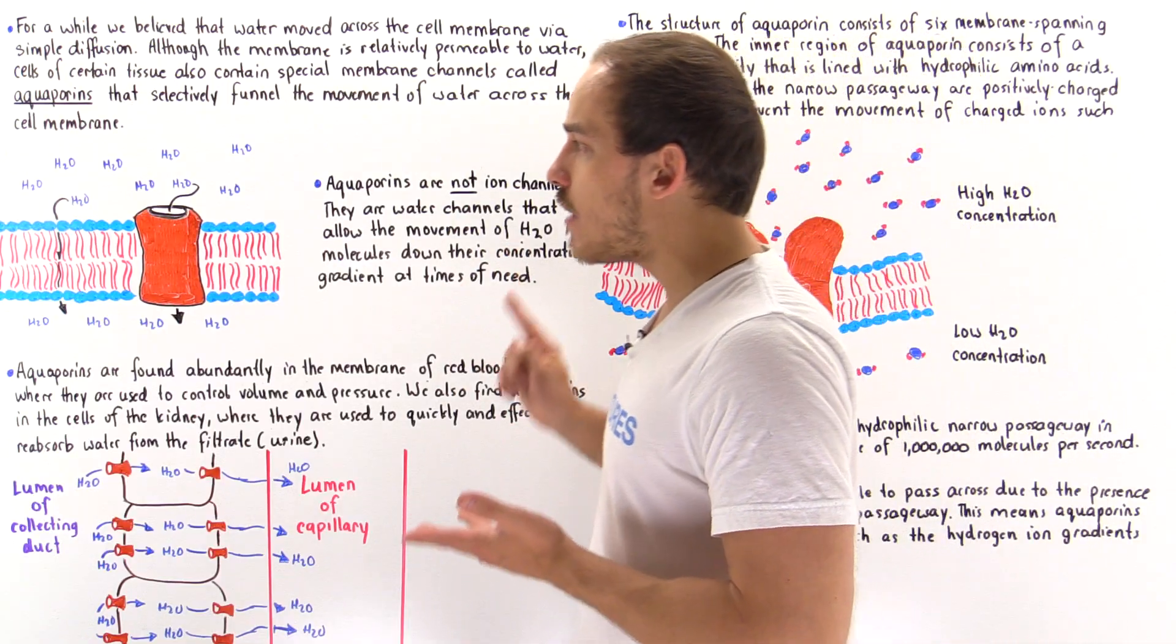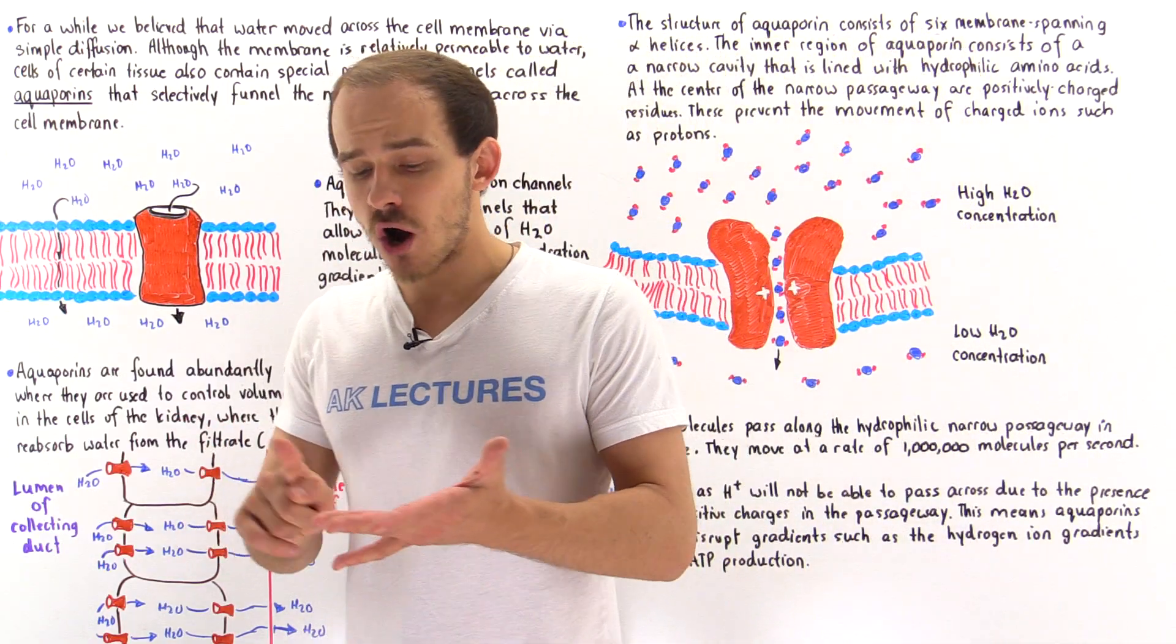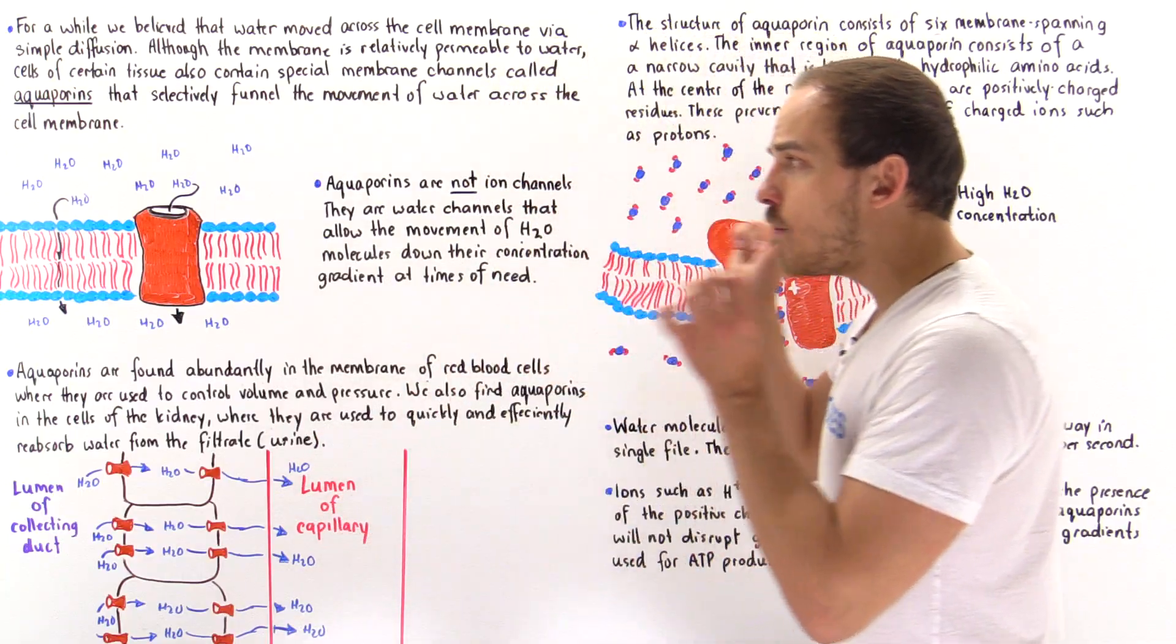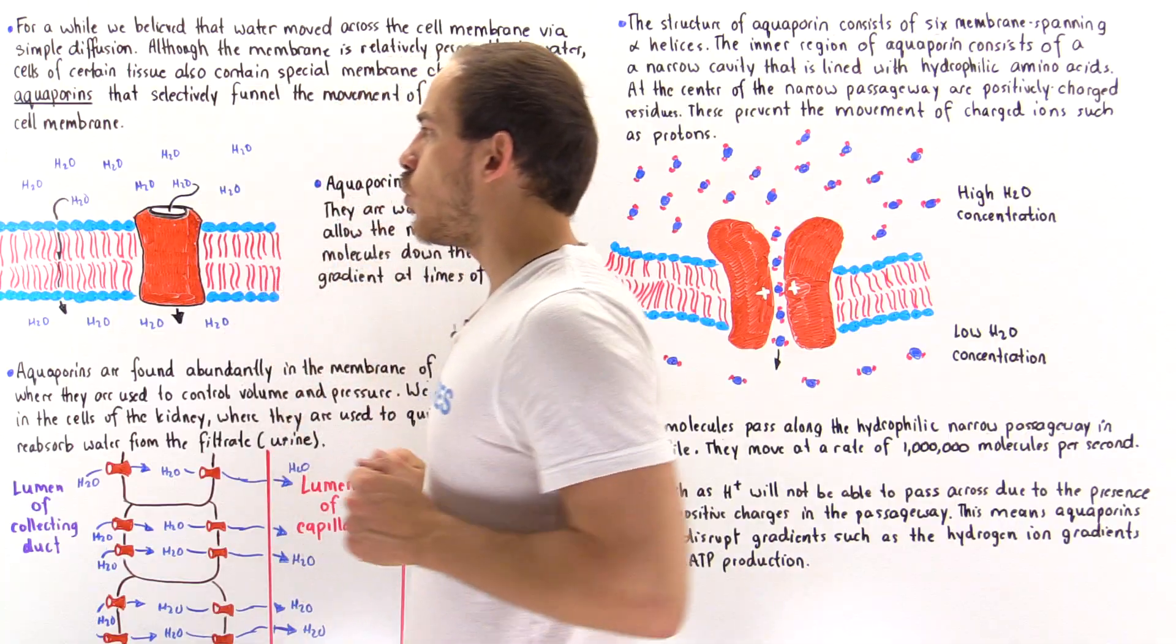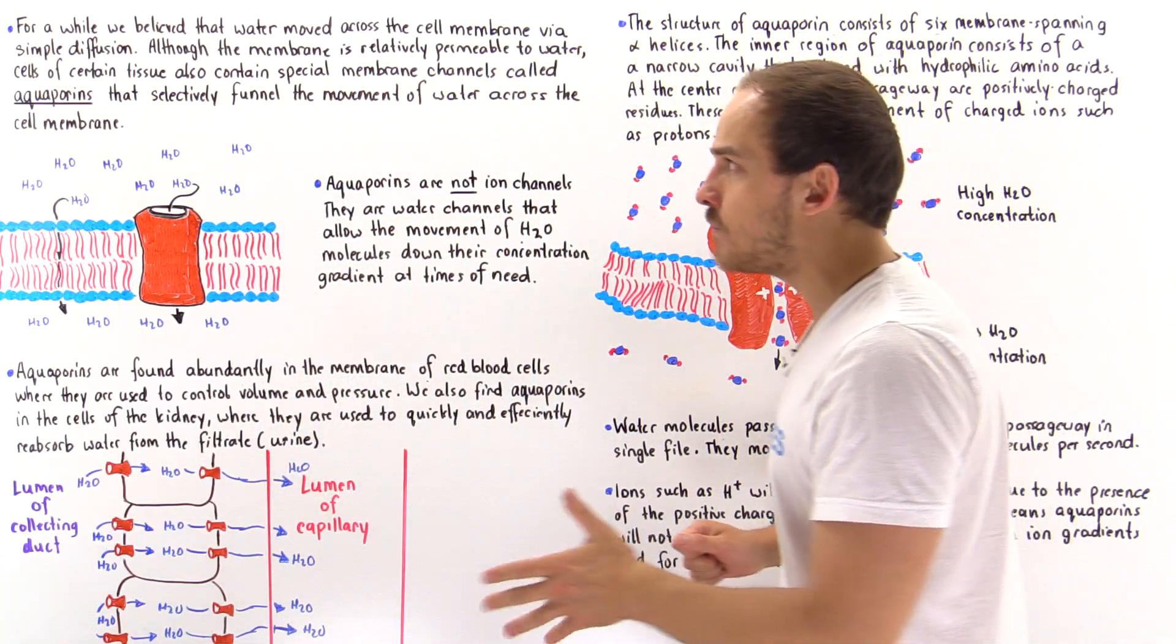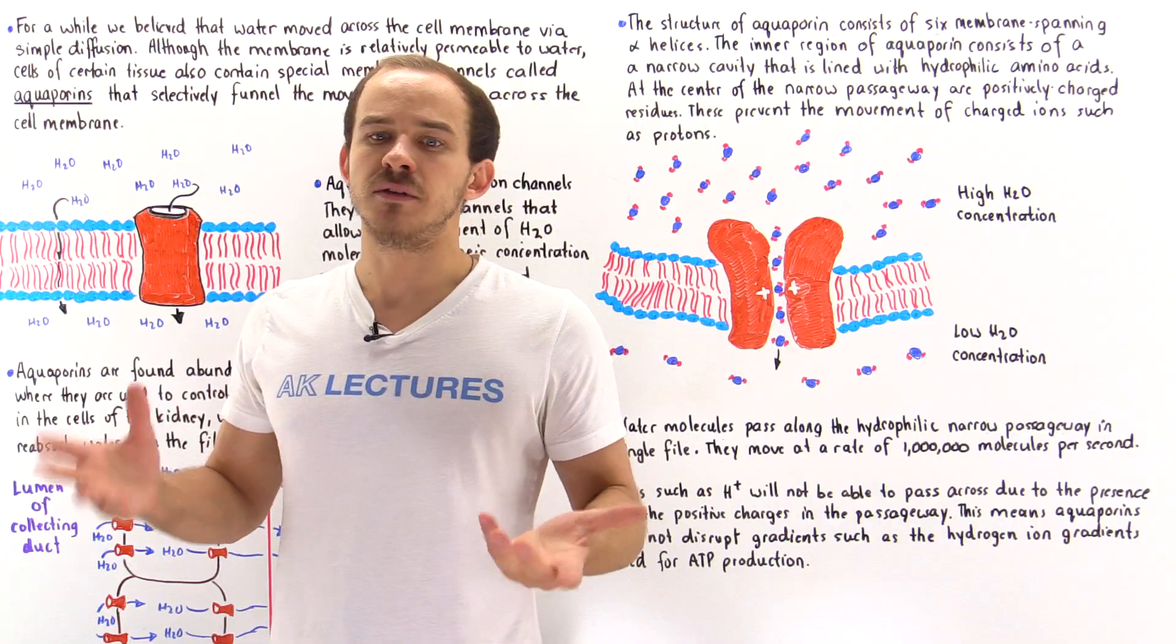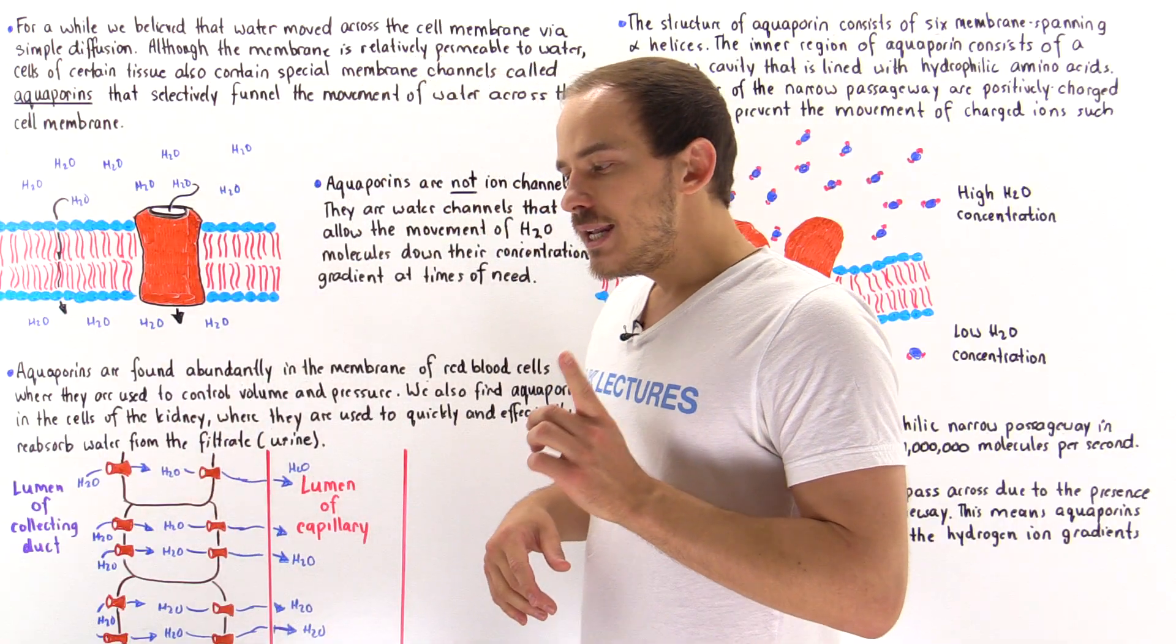Because of the small size of these water molecules, the fact that water molecules don't actually have a full charge, and because we have so many of these water molecules colliding with the membrane, these water molecules will in fact cross that membrane via the process of simple diffusion.